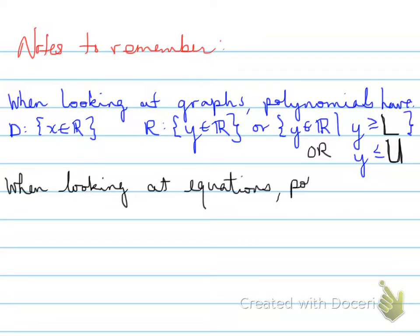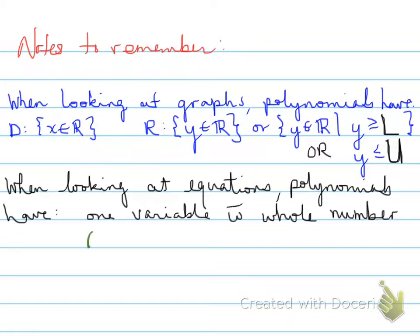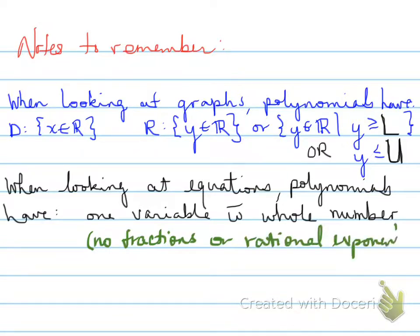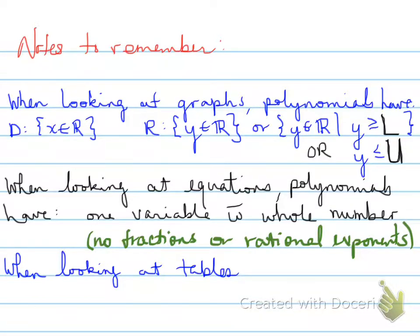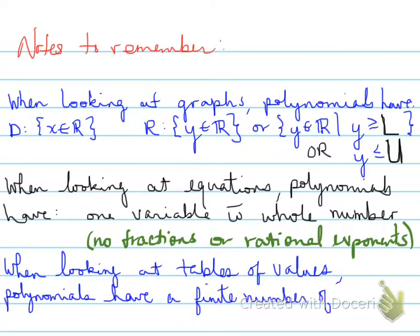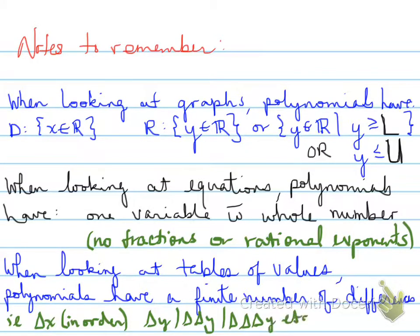When looking at equations, polynomials have one variable with a whole number exponent — there are no fractional or rational exponents. When looking at tables of values, polynomials have a finite number of differences. Provided that the delta x is in order, the delta y, delta-delta y, and triple delta y will eventually become constant, at the degree value of the polynomial function.